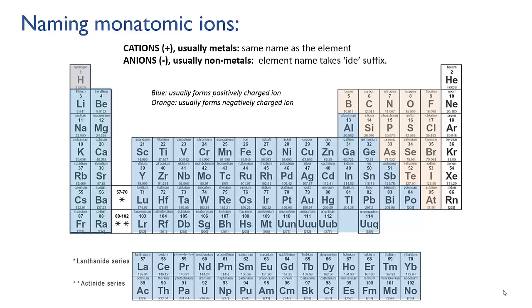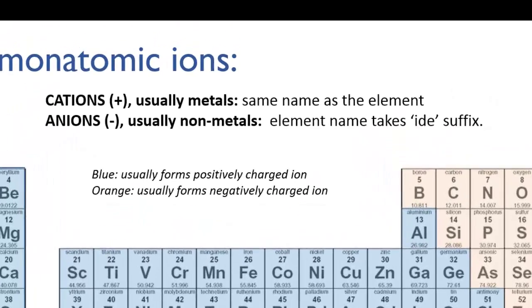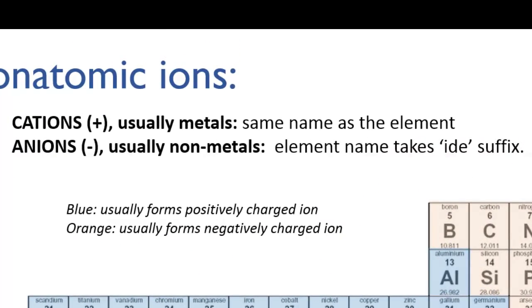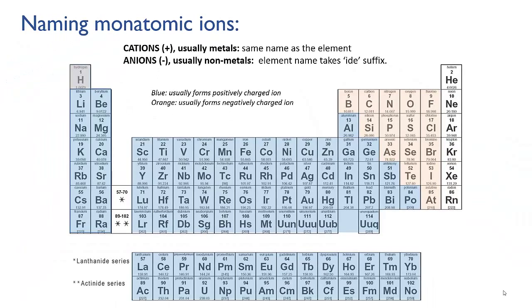If a monatomic ion is positively charged then its name is the same as the neutral atom. This usually happens with metal atoms so when a sodium atom becomes an ion we simply call it a sodium ion. And you can have tin ions and uranium ions and iron ions. Hydrogen can also form positive ions as we've said. And they would just be called hydrogen ions.